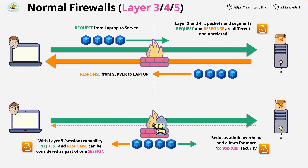Now this next point is really important. In both cases, these firewalls don't understand anything above the layer at which they operate. The top firewall operates at layer 3 and 4, so it understands layers 1, 2, 3, and 4. The bottom firewall does this plus layer 5. Both of them can see IP addresses, ports, and flags, and the bottom one can additionally understand sessions. Neither of them can understand the data which flows above this.